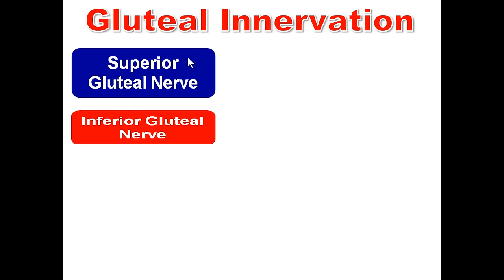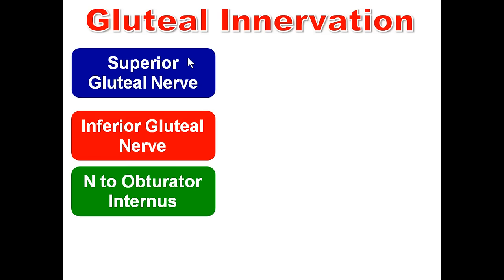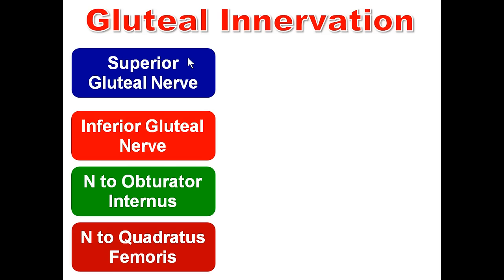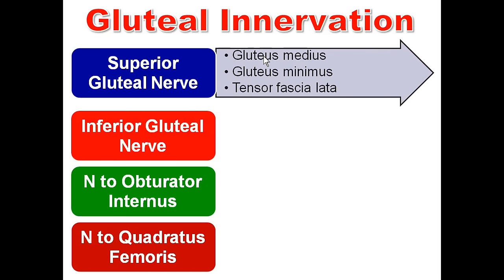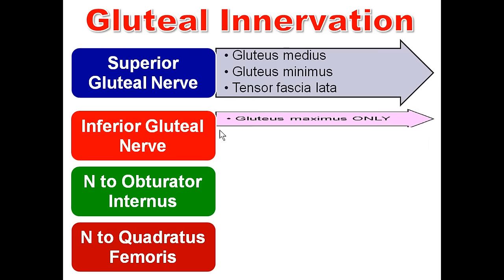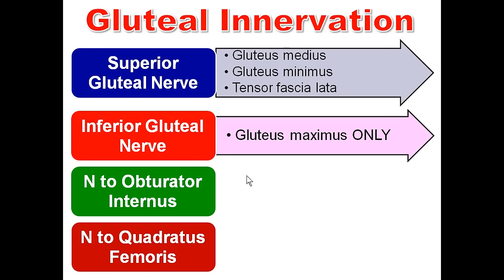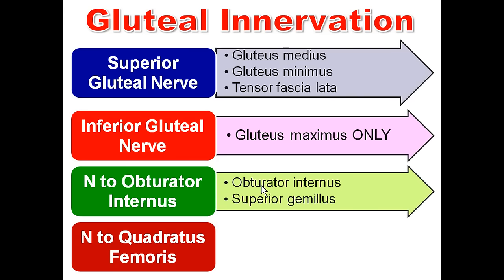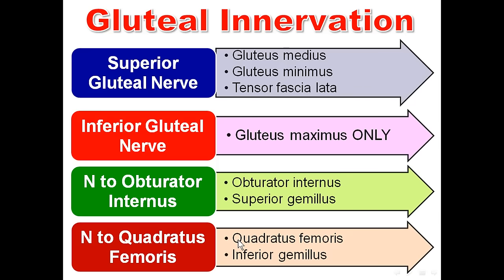The superior gluteal nerve supplies gluteus medius, gluteus minimus, and tensor fascia lata. The inferior gluteal nerve supplies only one muscle: gluteus maximus. The nerve to obturator internus and the nerve to quadratus femoris each supply two muscles. The nerve to obturator internus supplies obturator internus and the muscle above it, superior gemellus. The nerve to quadratus femoris supplies quadratus femoris and the muscle above it, inferior gemellus.